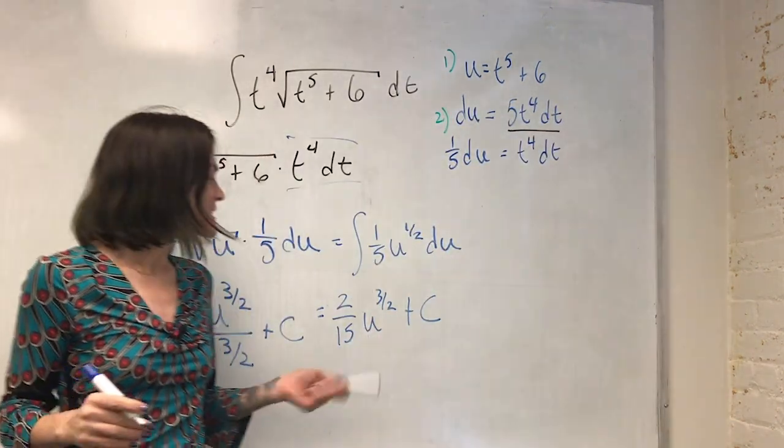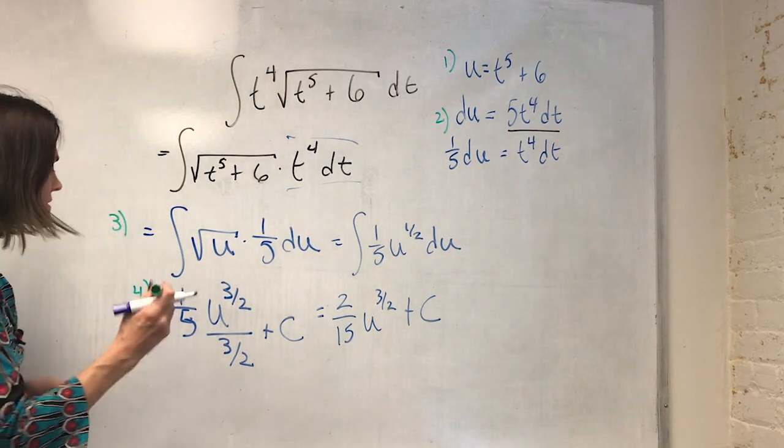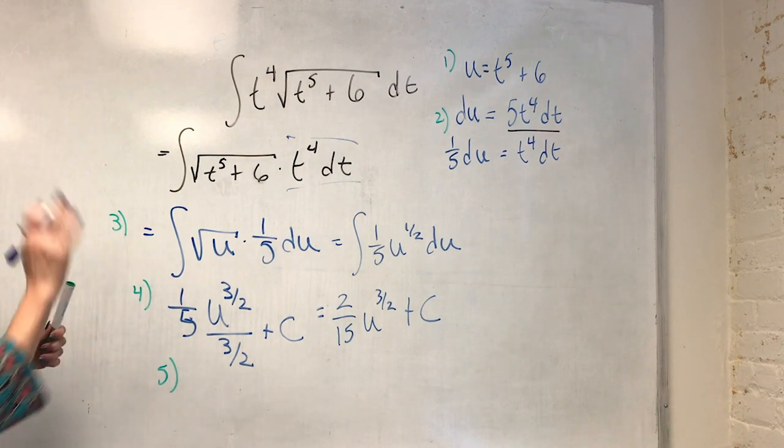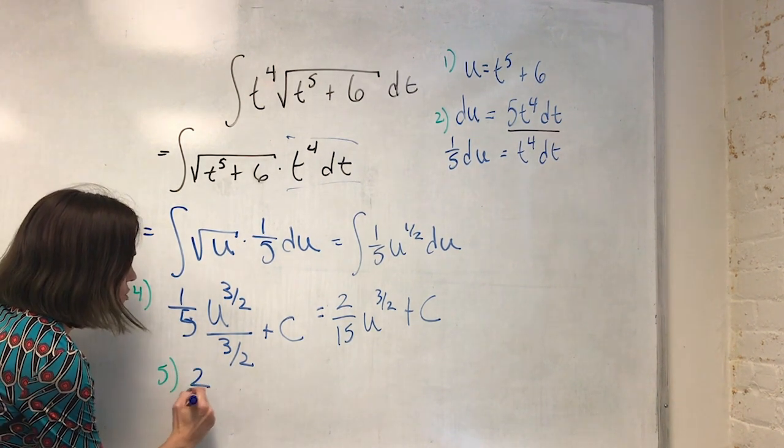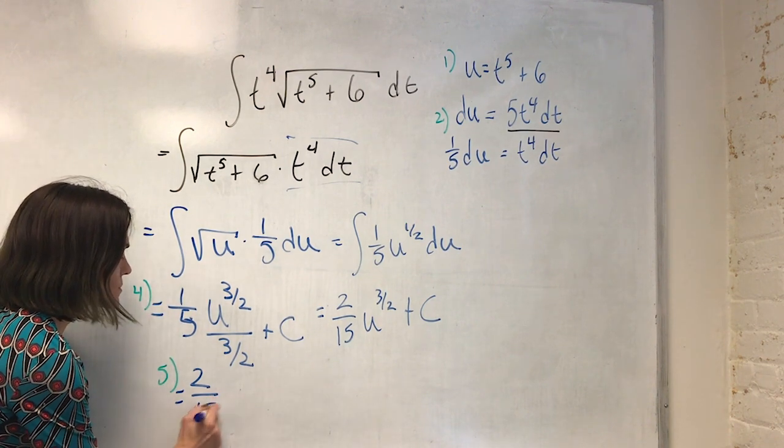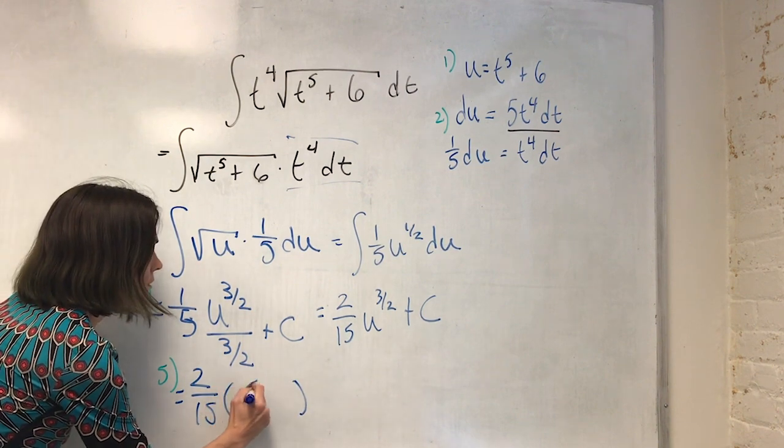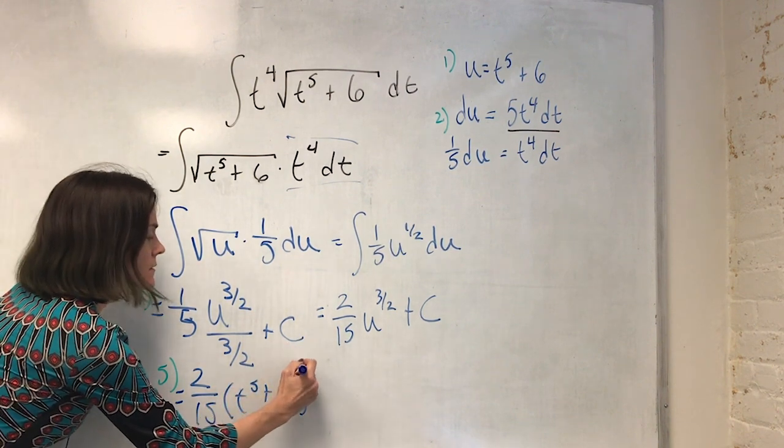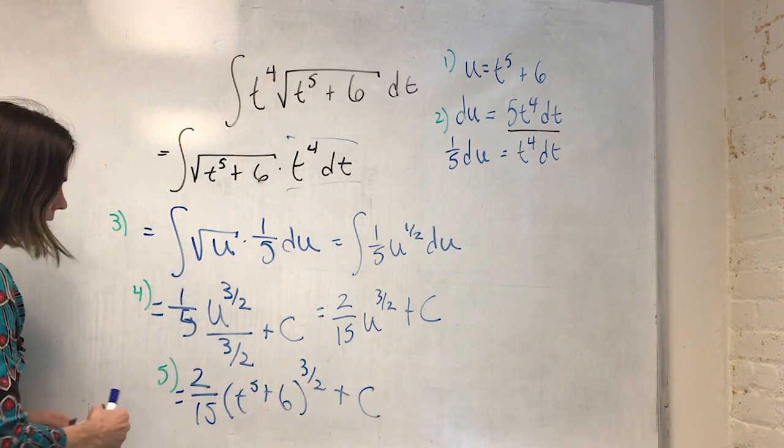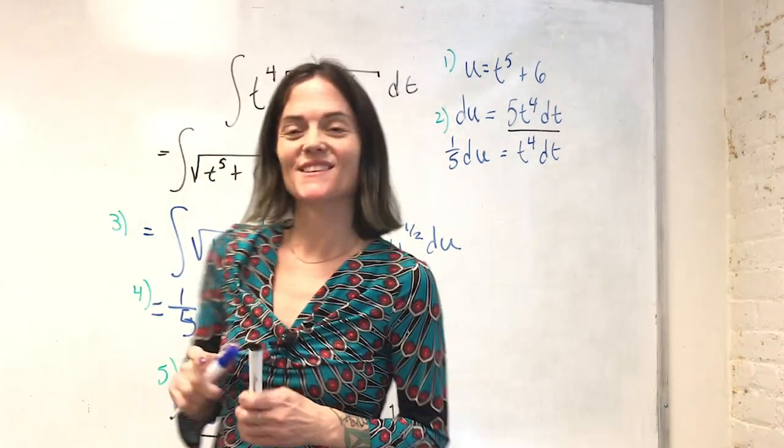But don't stop here. This is with respect to u. And I mentioned our final step, step five, as we go back to t. So two-fifths, this is equals, this was equals, this is two, excuse me, two-fifteenths, t to the fifth, plus six, the three-halves, plus c. And this is here. This is our final answer.